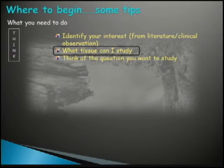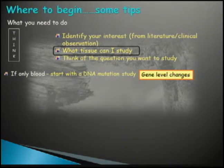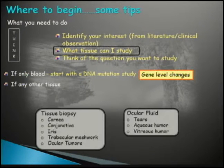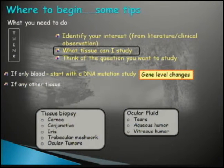Think about what tissue you could study. If only blood is available, you'd start with a DNA mutation study looking for gene-level changes. But if your disease allows you to get other specimens — such as cornea, conjunctiva, iris, trabecular meshwork, or tumors — or if you can get ocular fluids such as tears, aqueous humor, or vitreous humor — you could look at transcript-level or protein-level changes.